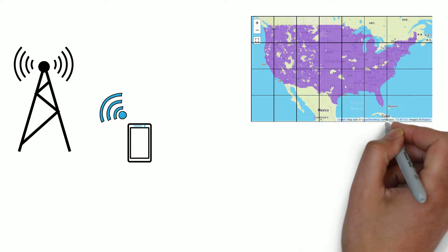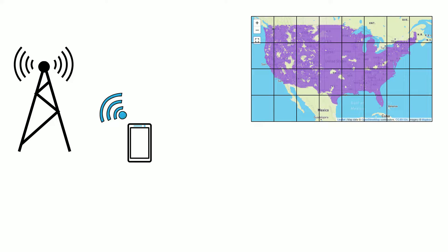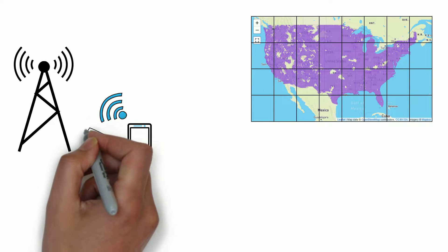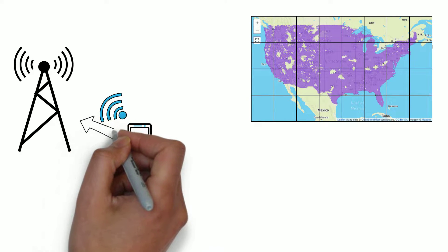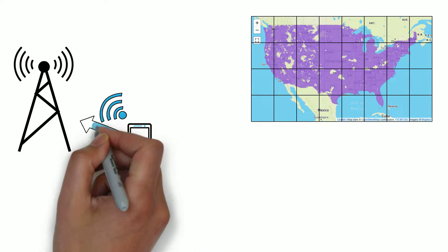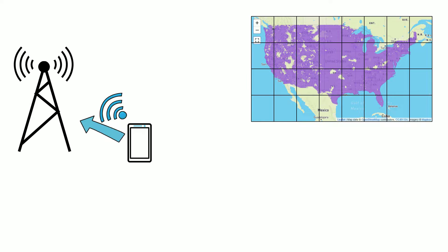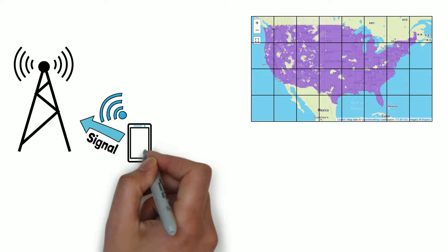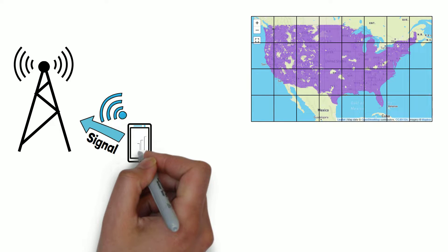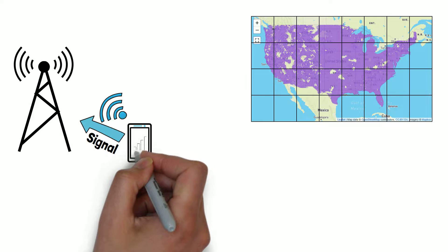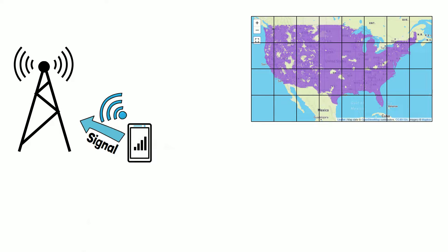Mobile devices communicate with the network by connecting to the nearest cell tower. All phones send periodic signals to the nearest cell towers even when not making a phone call. They do this to ensure they are connected to the nearest tower for optimal performance. This is also how your device knows how strong its signal is.